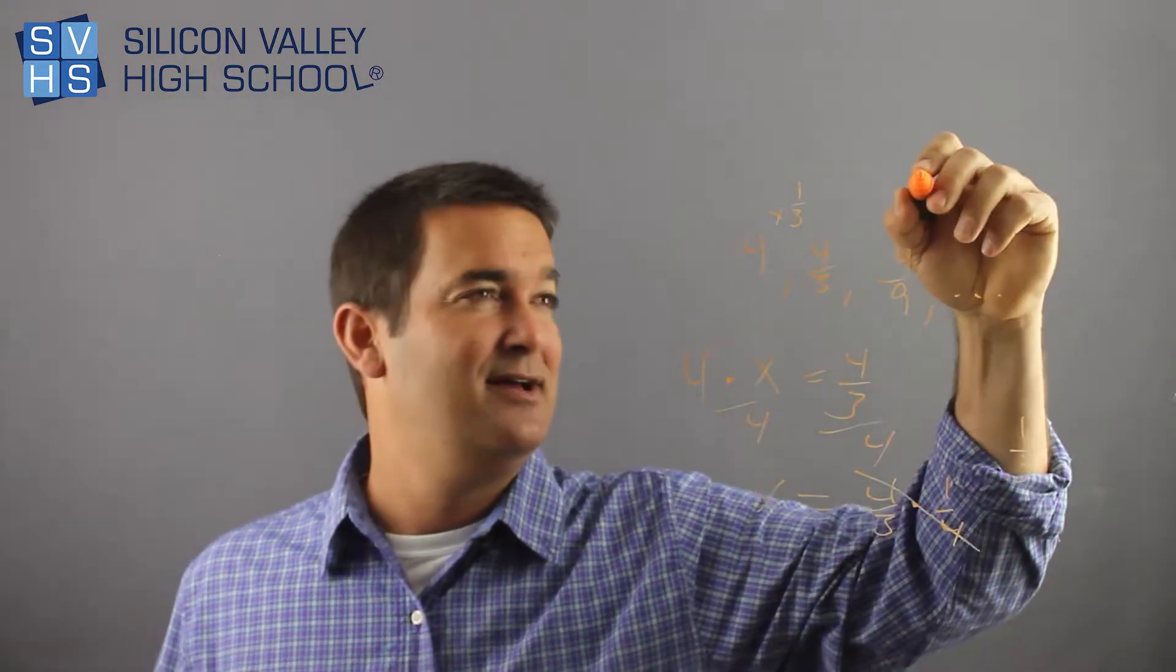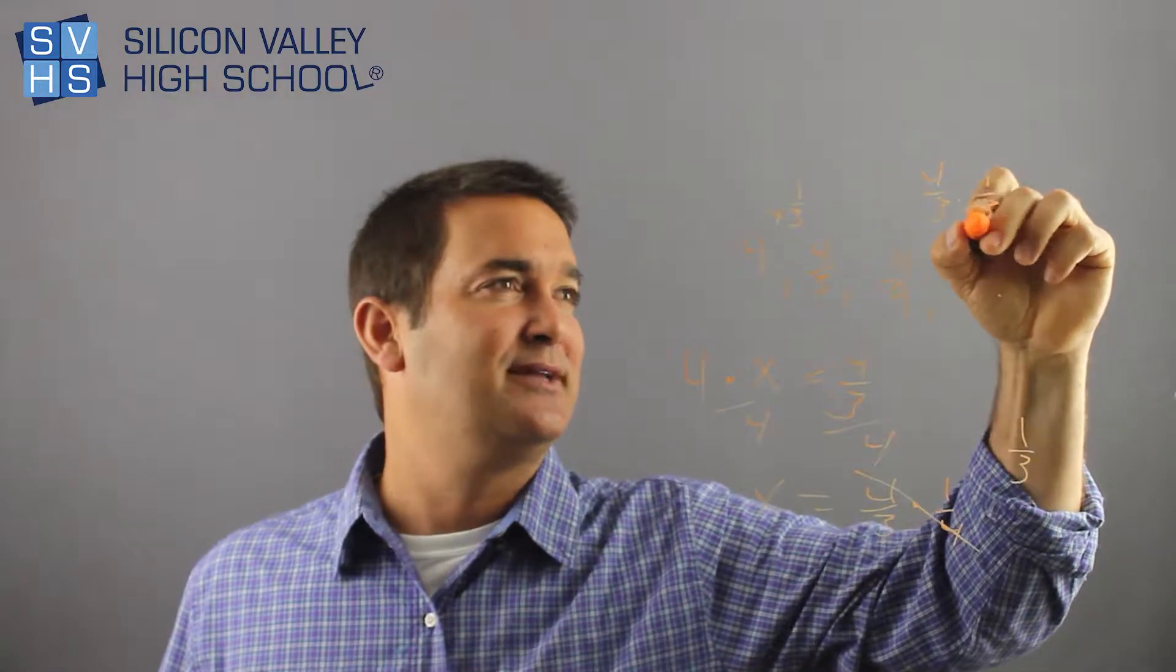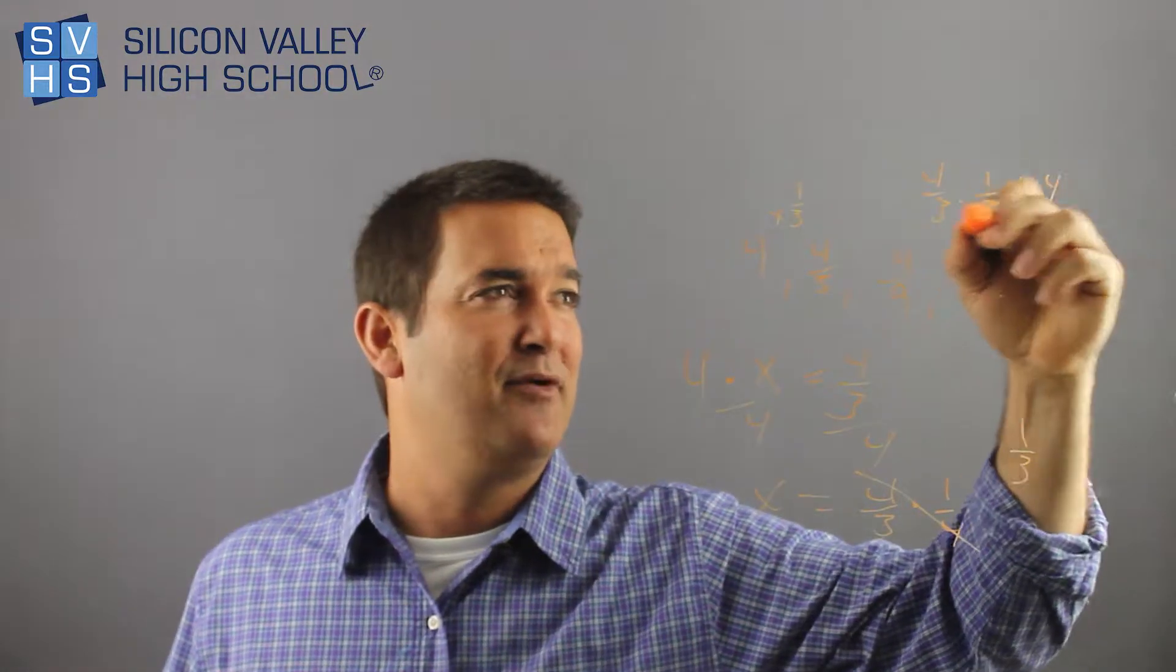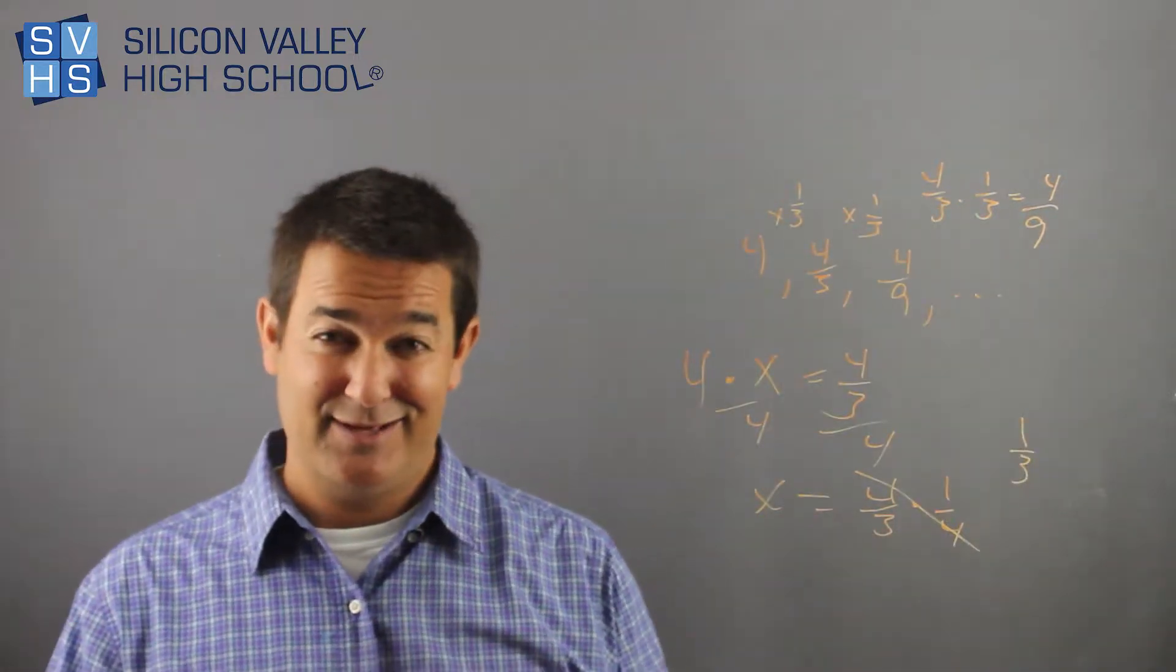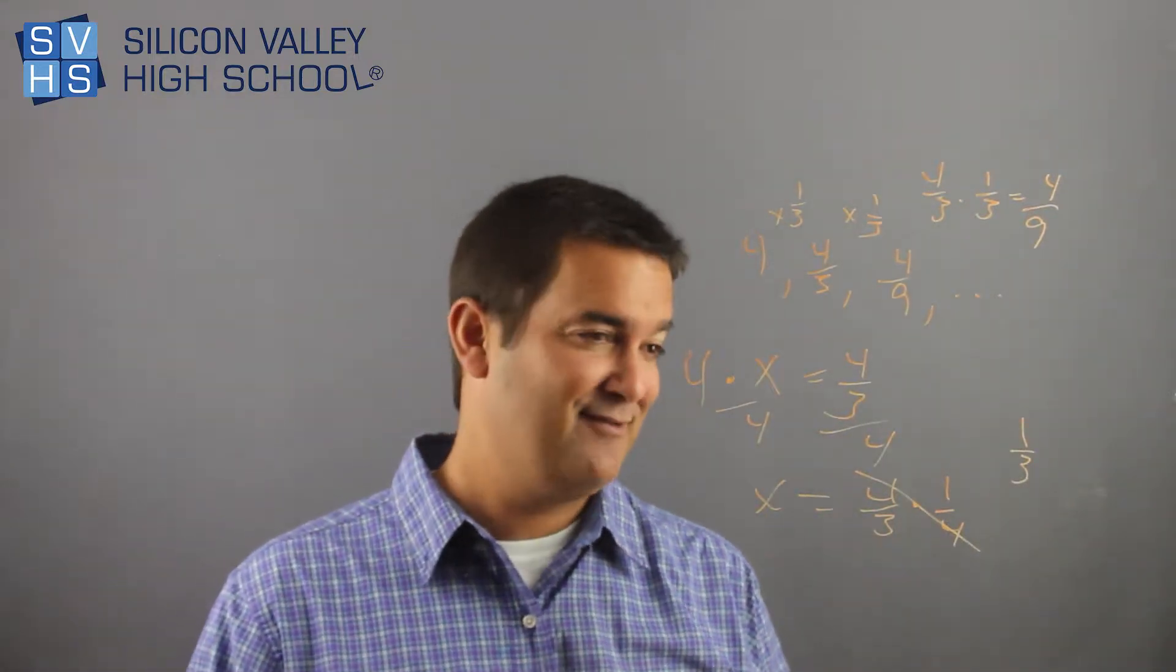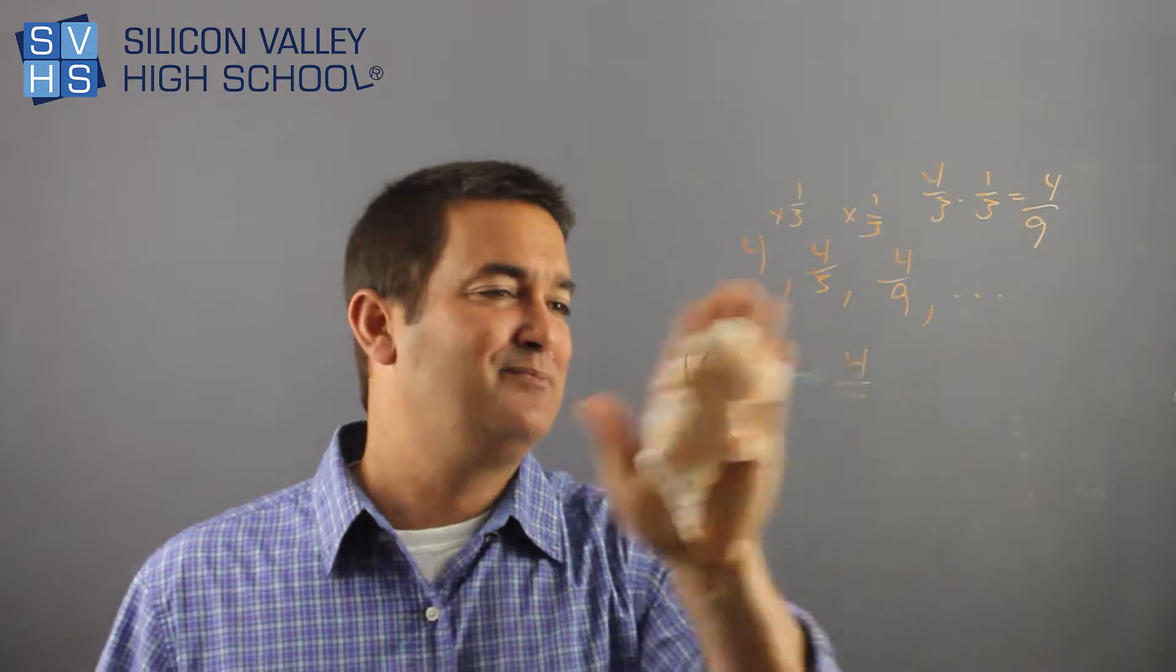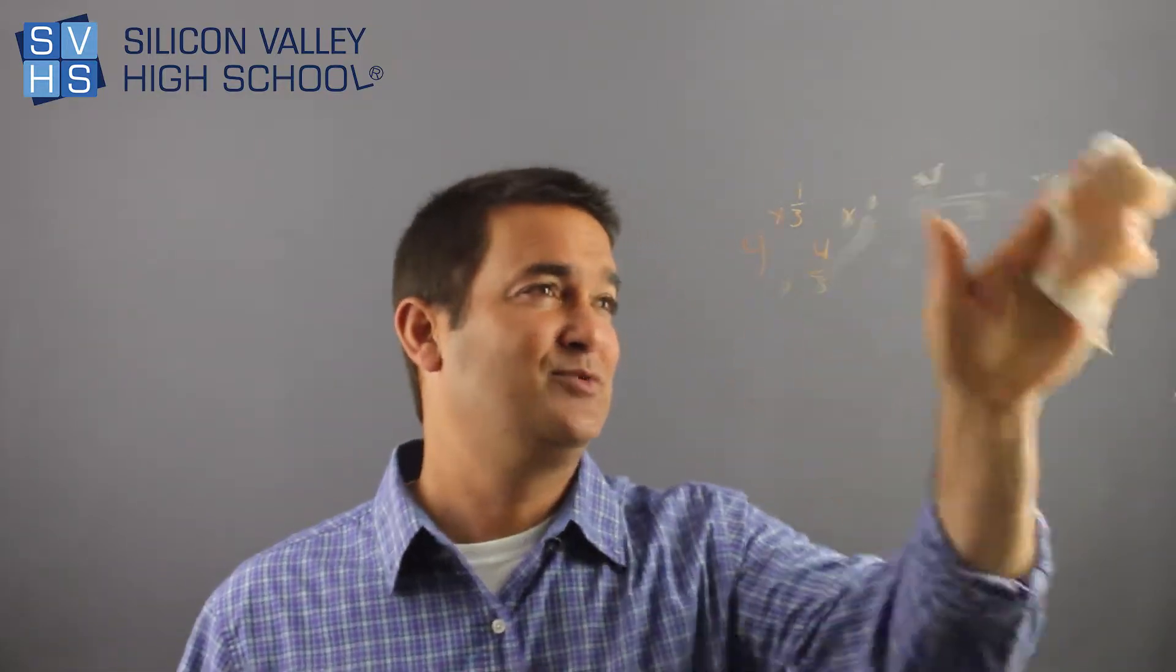Let's see if the next one is. Let's test it. 4 thirds times a third again would be 4 top times top over bottom times bottom, 9. Yes, this is geometric. And not only that, it's multiplied by 1 third every time. So don't be fooled if the number is weird. It's totally fine if the number is weird.